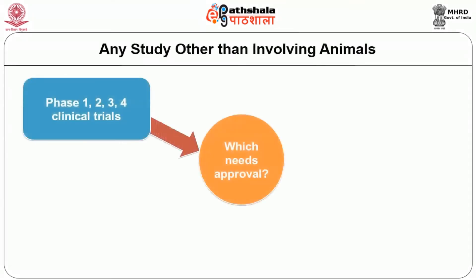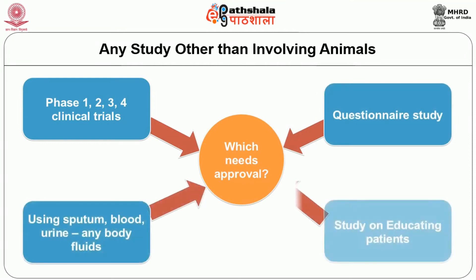You have to have ethics committee approval for any study involving human beings, their material, or their data. Any study other than involving animals — related to human beings — can be clinical trials, questionnaire studies asking simple questions to people, educational studies educating patients about nutritional status or nutritional requirements, or studies using sputum, blood, urine, or any body fluid. Once animals are involved, it goes to the institutional animal ethics committee; all other studies go to the institutional human ethics committee for approval.